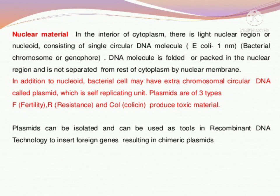That nuclear material we call nucleoid, bacterial chromosome, or genophore. In it, the DNA is found folded in the cytoplasm itself — we observe the absence of nuclear membrane. In addition to this nuclear material and nucleoid, an extra-chromosomal circular DNA molecule is present — its name is plasmid. The plasmid helps in fertilization and provides resistance to bacteria against any type of medicine or chemical.